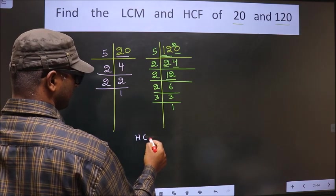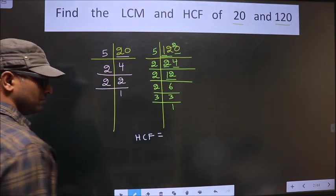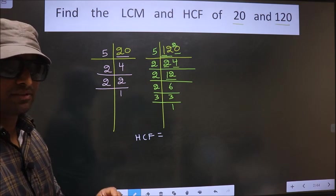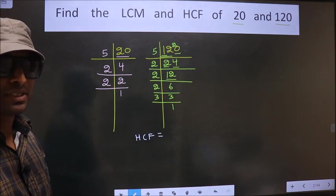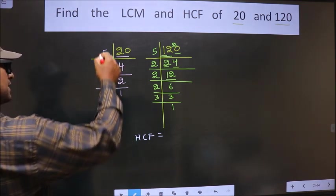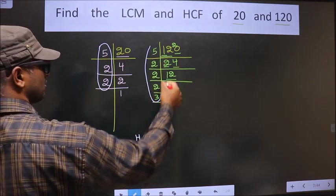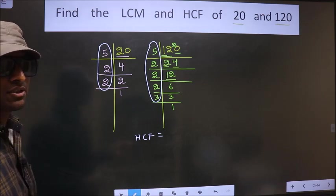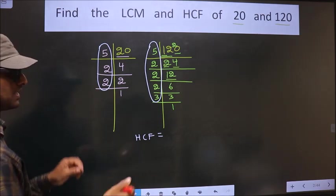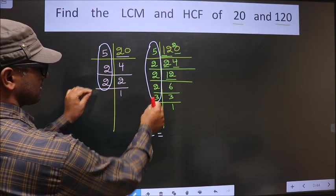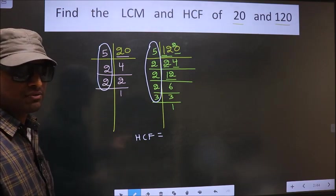So now our HCF is the product of numbers that are present here and also here. So now we should find the numbers that are present in these two places.